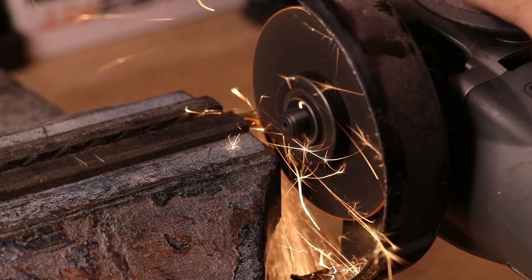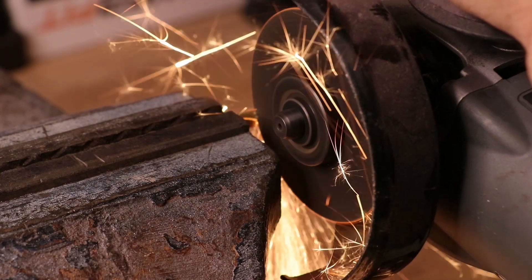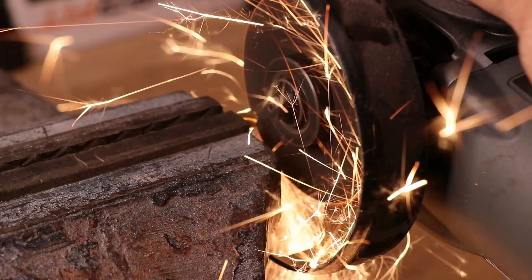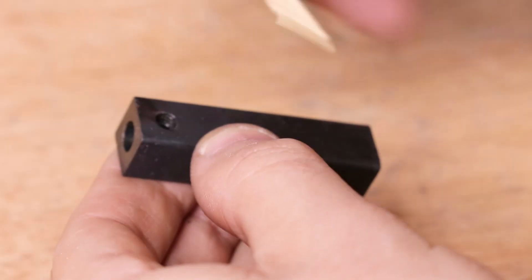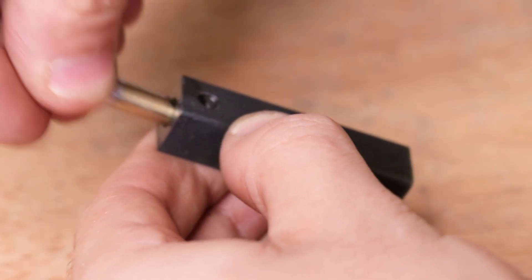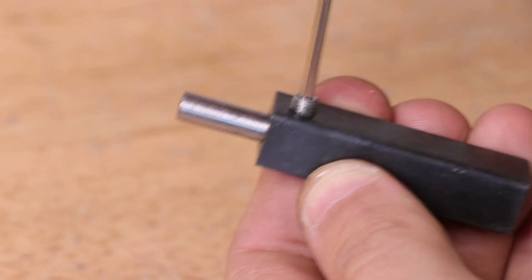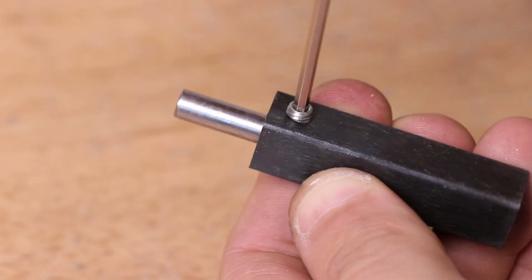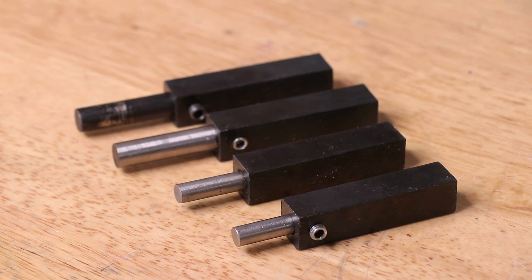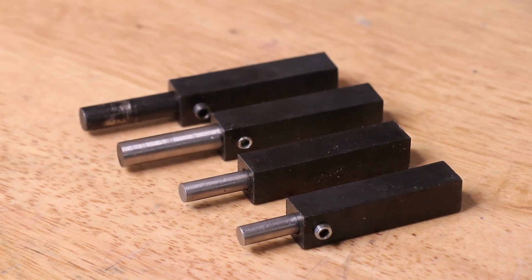Since we can't grind any tools into the flutes of the twist drill, I'll remove most of it using a grinder. Next, we can start to grind our high-speed steel tools.